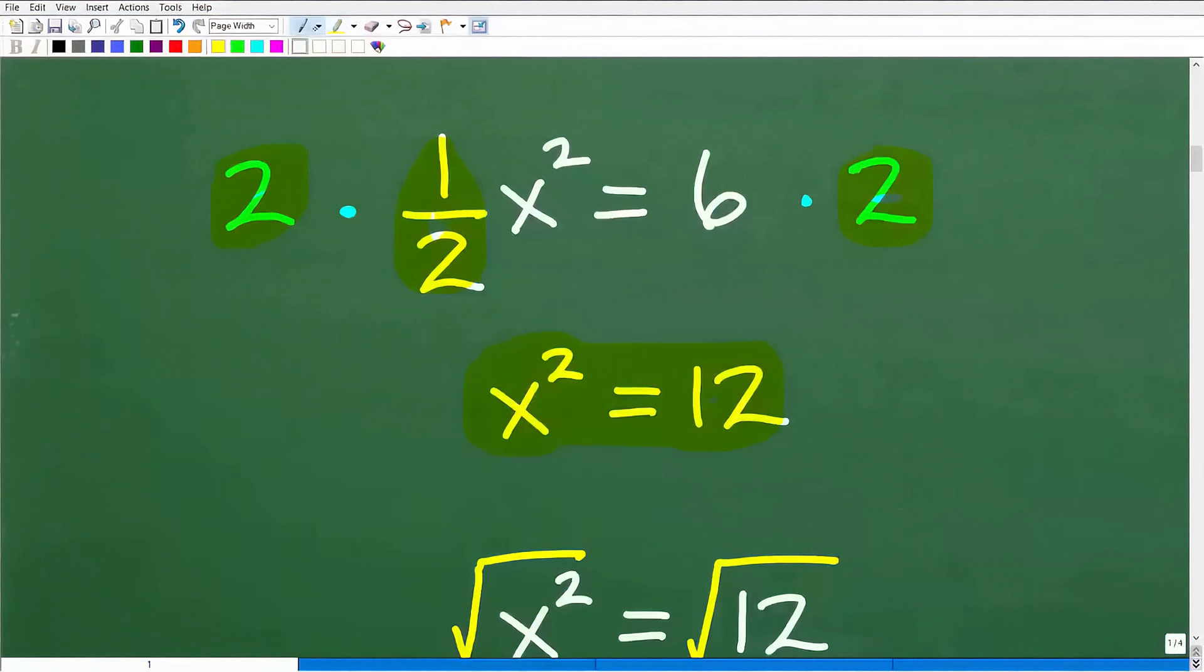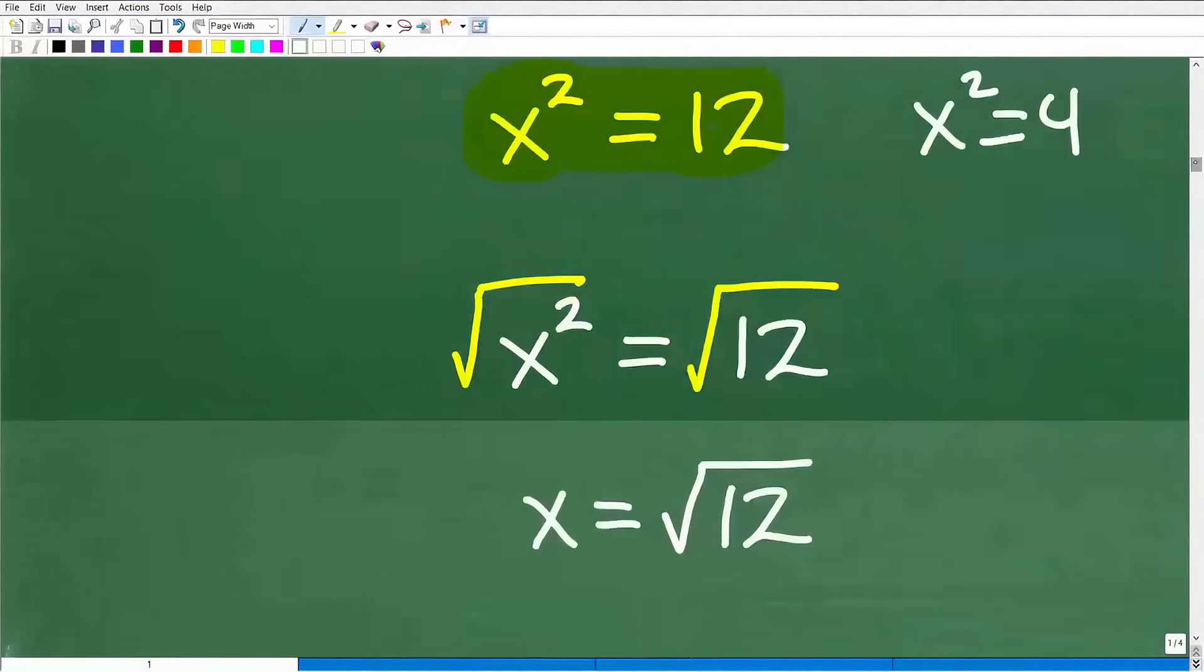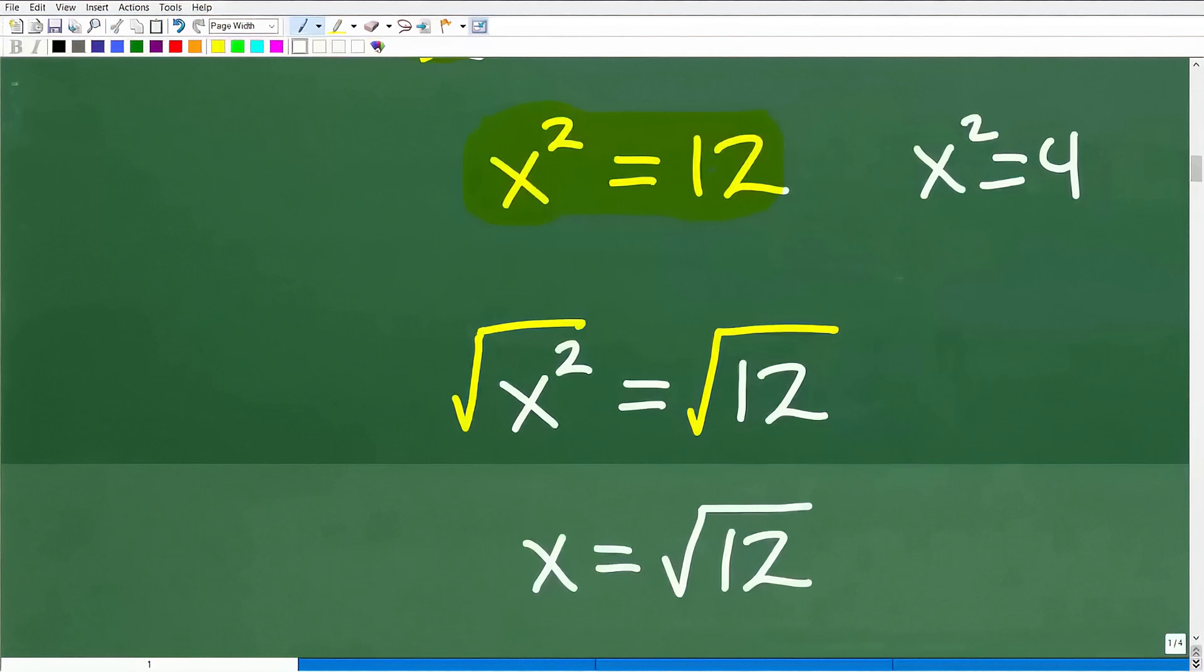So now here we have a simple quadratic equation: x squared equals 12. This is very much like this previous problem I showed you, x squared equals 4. All we need to do right now is take the square root of both sides. And when we do that, the square root of x squared is x, and the square root of 12 is square root of 12.